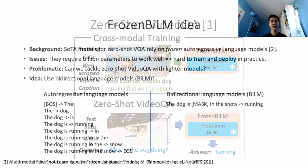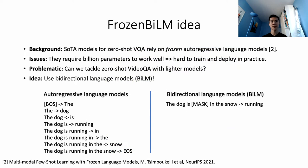Recently, a promising line of work builds on frozen autoregressive language models for zero-shot visual question answering. However, these models require billions of parameters to work well, which makes them hard to train and also hard to deploy in practice.